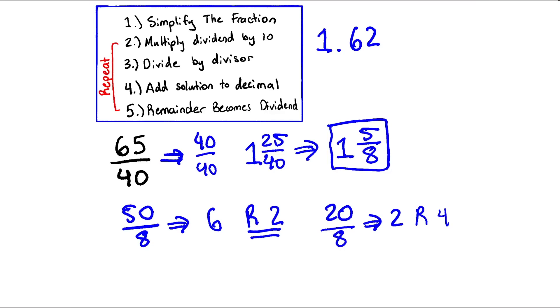And finally, we take that 4, multiply by 10, divide by our divisor, divide by 8, and that gives us 5. And since 5 has no more remainder, we're done. So our final answer is 1 point 625.